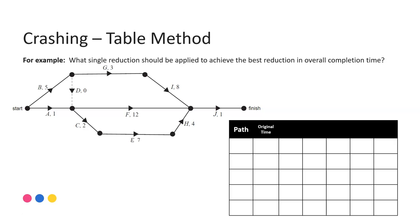Let's look at a second example of the table method. We've got our project network and we need to find what single reduction should be applied to achieve the best reduction in overall completion time. Our first step is to note down all the possible paths from start to finish. The first path is B, G, I, J with a length of 17. The second path is B, then the dummy, F and J — you don't need to write the dummy — and that path will be 18.